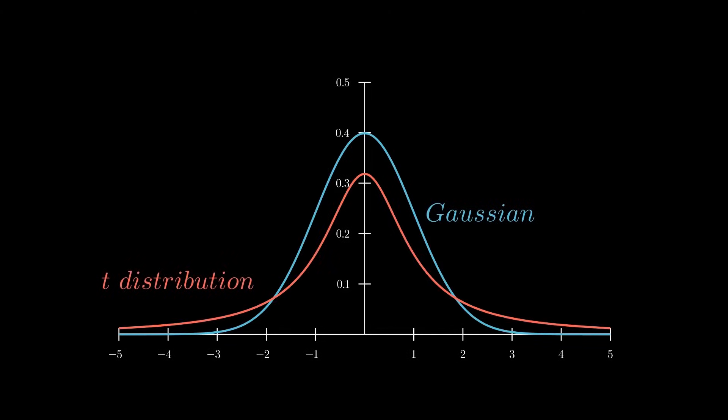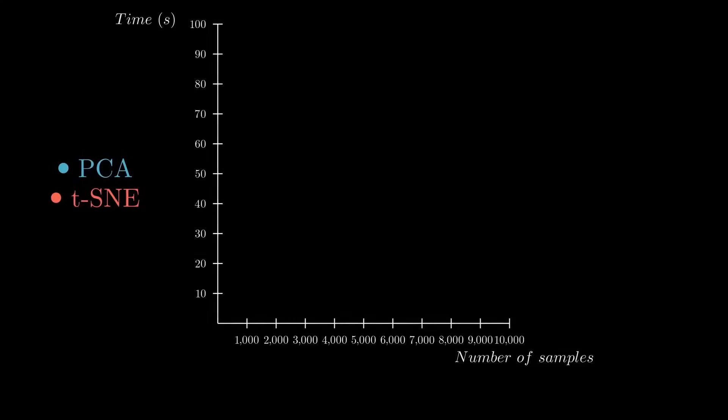t-SNE introduces several changes to speed up and improve the visualizations of SNE, but we won't cover all of these in this video. The most important tweaks are in the probability distributions, like using symmetric distributions in the high-dimensional space and Student's T-distribution in the low-dimensional space. Indeed, these distributions are easier to compute because they don't use the exponential function. Even with many modifications and hacks, t-SNE is still very slow compared to PCA. As you can see, when running it on 10,000 MNIST samples, it takes almost 90 seconds to get the result.